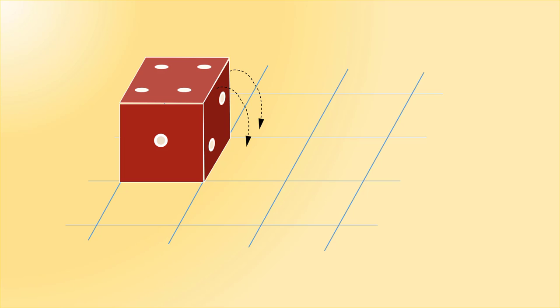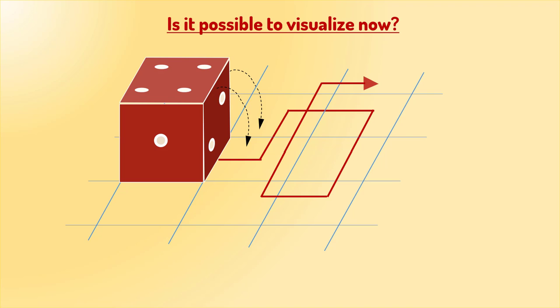When you imagine the dice rolling, it's a bit difficult to keep track of the numbers after the dice makes the third move. But I am sure you have managed to visualize the number on the top. But if I asked you to visualize the dice rolling on a more complex path, then it gets extremely challenging to keep track of the numbers.